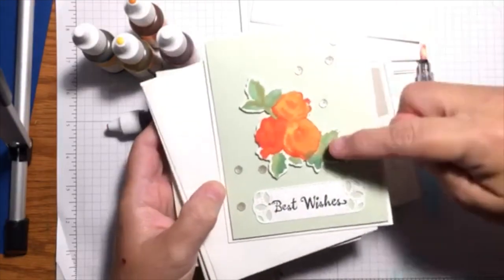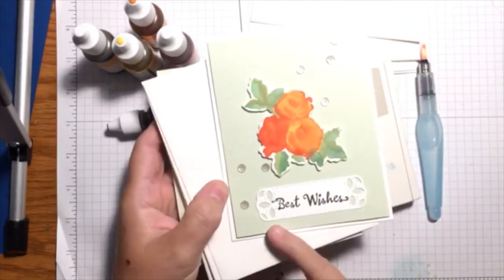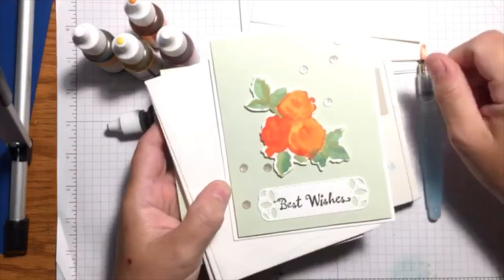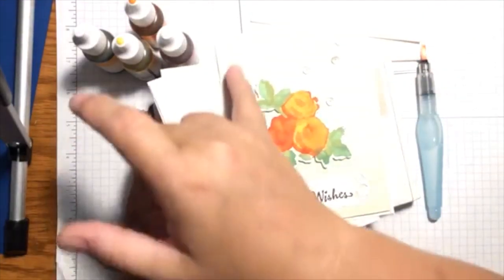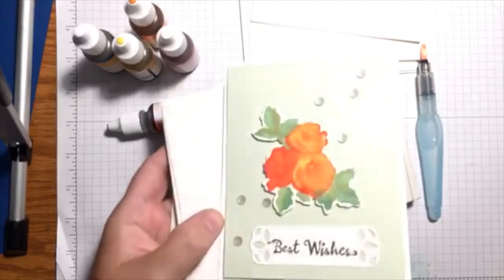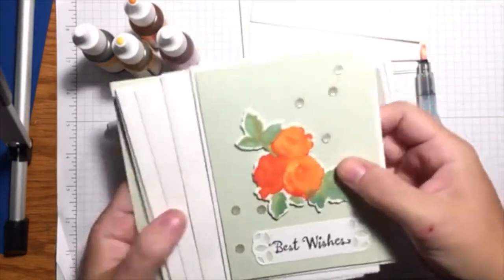Then there's this one - same flowers, I just oriented them a little different. I used the stitch framelits and I put some self-adhesive sequins on it.